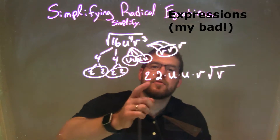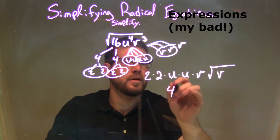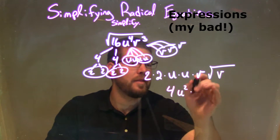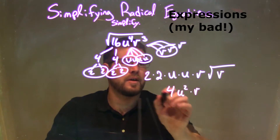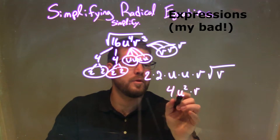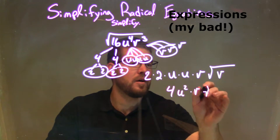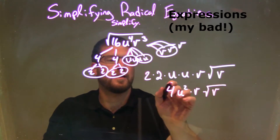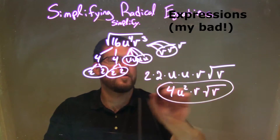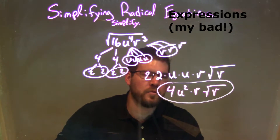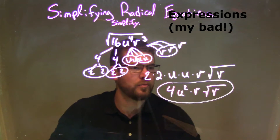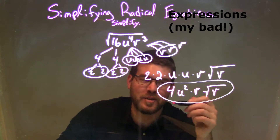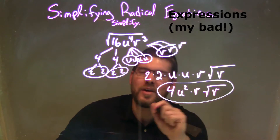So now let's simplify this. 2 times 2 is 4, u times u is u squared, and then v is left over. So the outside simplifies to be 4u squared times v. On the inside of the square root, we're just left with a single v, and that is our final answer: 4u squared times v times the square root of v. Note that the square root symbol and the v look very similar — try to keep them separate.